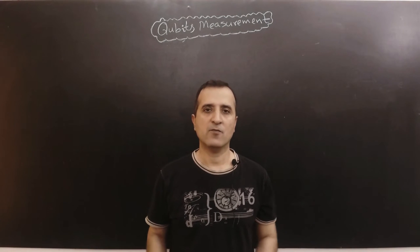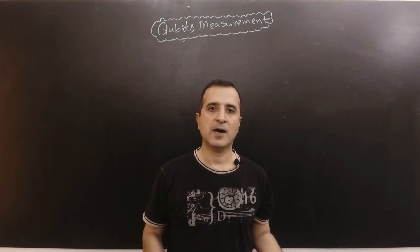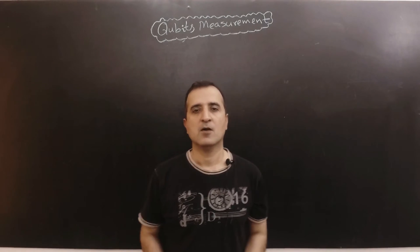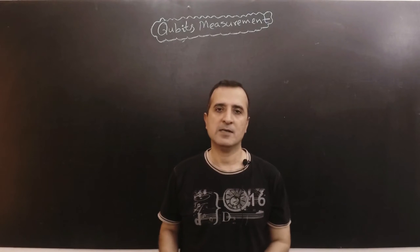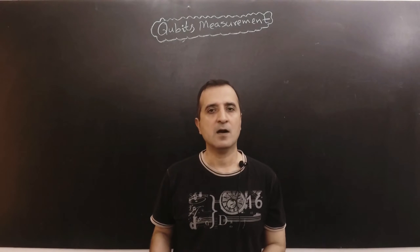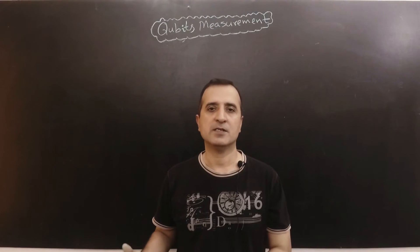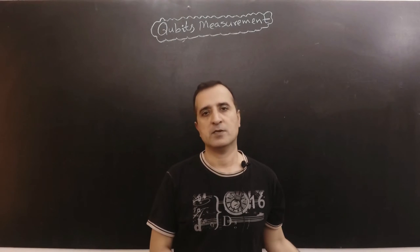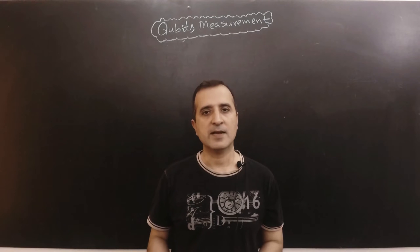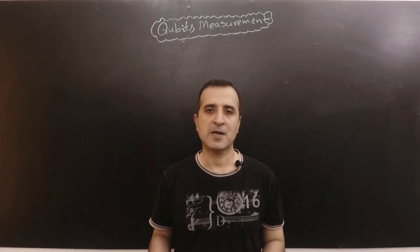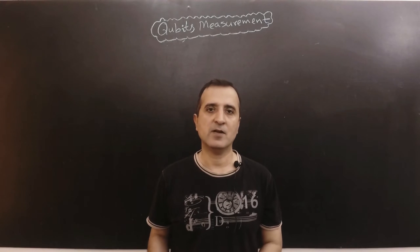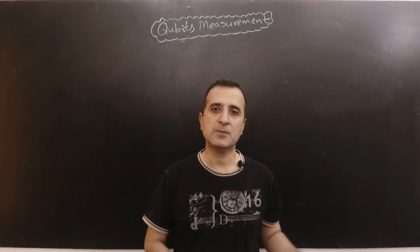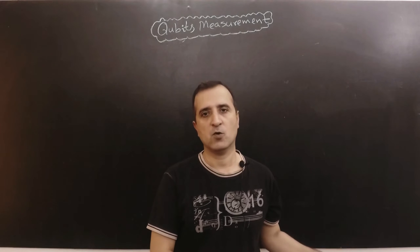In this video I will explain full and partial measurements of qubits. Full measurement implies that given an n-qubit register you measure all n qubits, whereas partial measurement implies that given an n-qubit register you measure a subset of those n qubits.